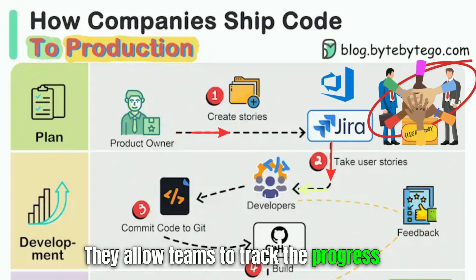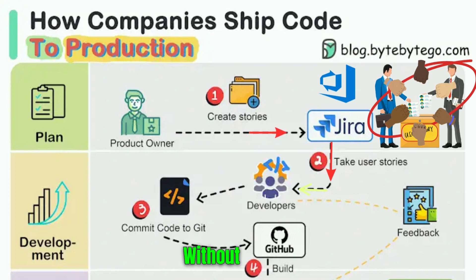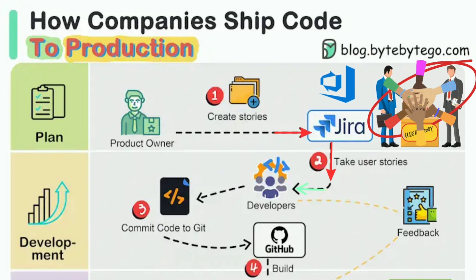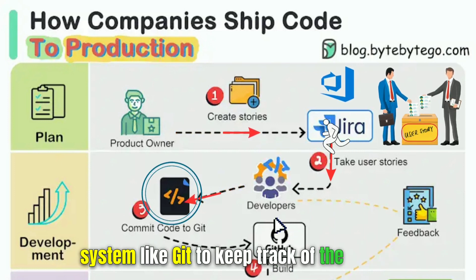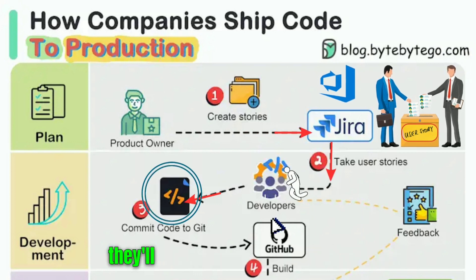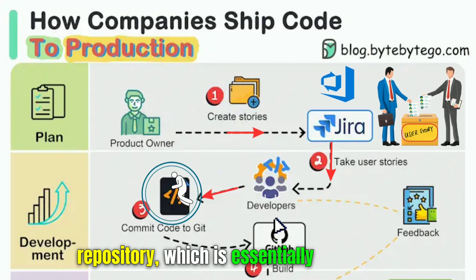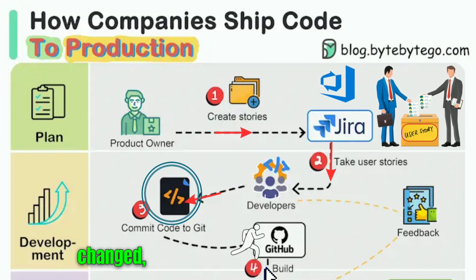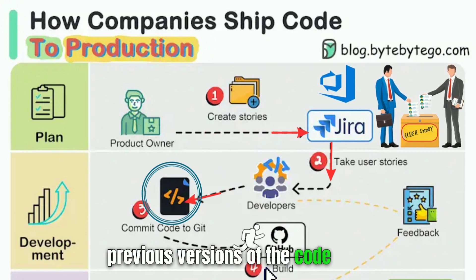These tools allow teams to track the progress of the work and provide a way to collaborate and communicate. Without them, it would be much harder to keep track of everything happening during the development process. The developers will also use a version control system like Git to keep track of changes to the codebase. When they make changes, they'll commit those changes to the Git repository, which is essentially a database that tracks all changes — allowing them to roll back to previous versions if needed.